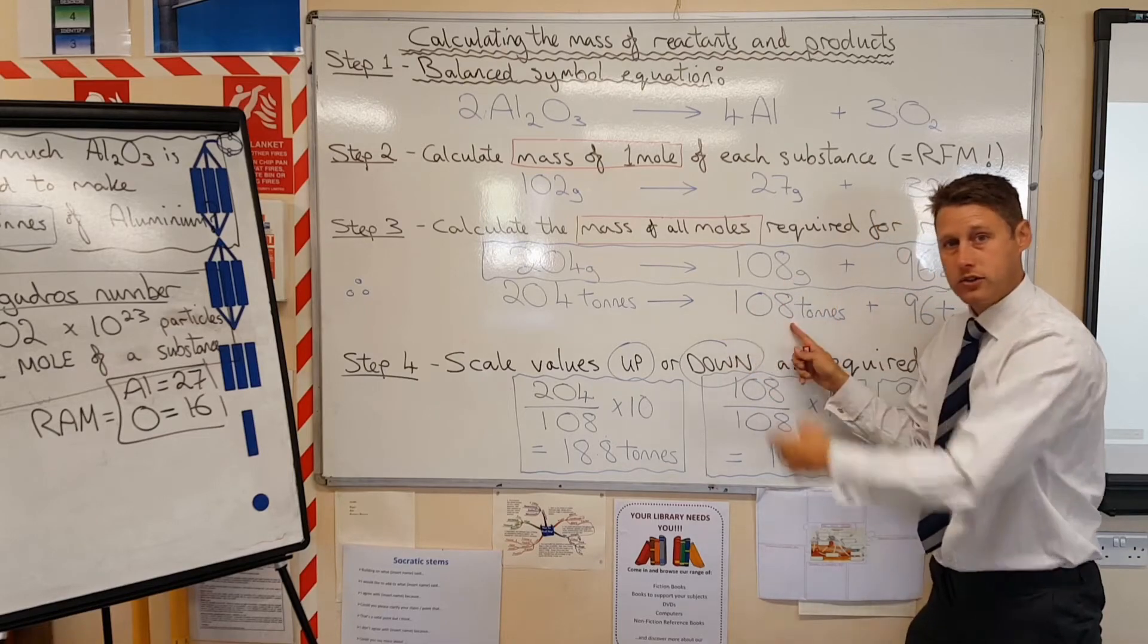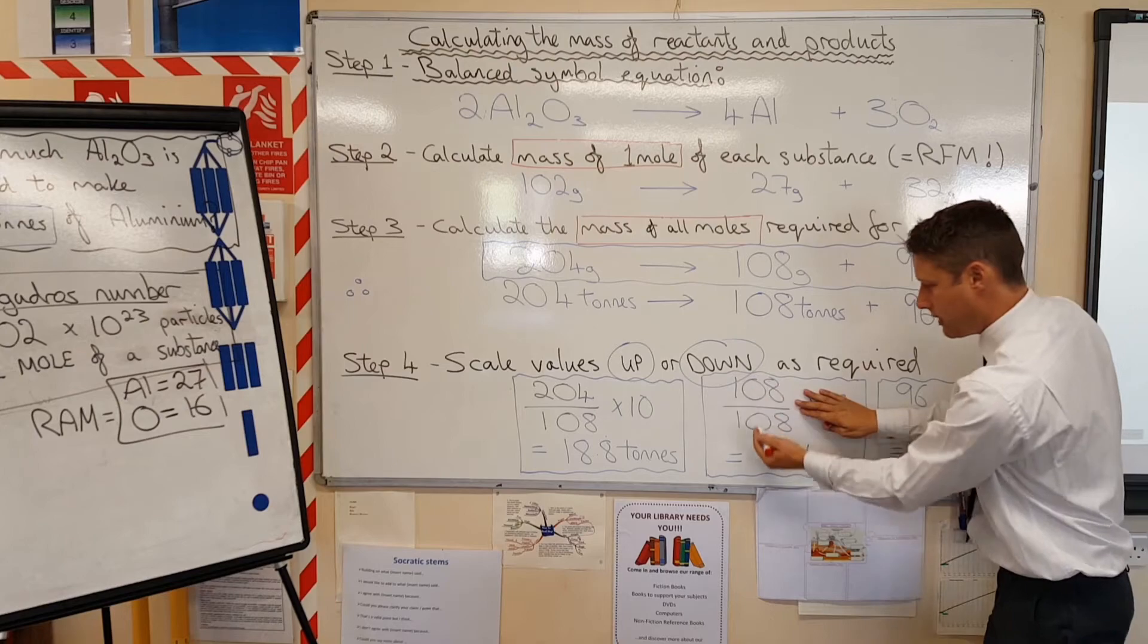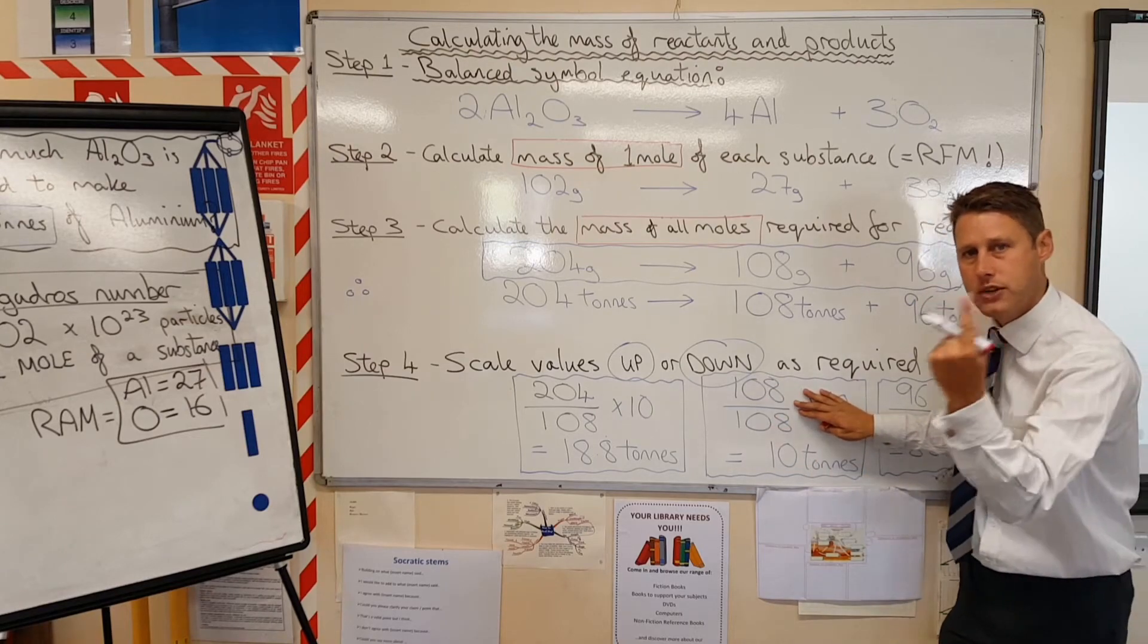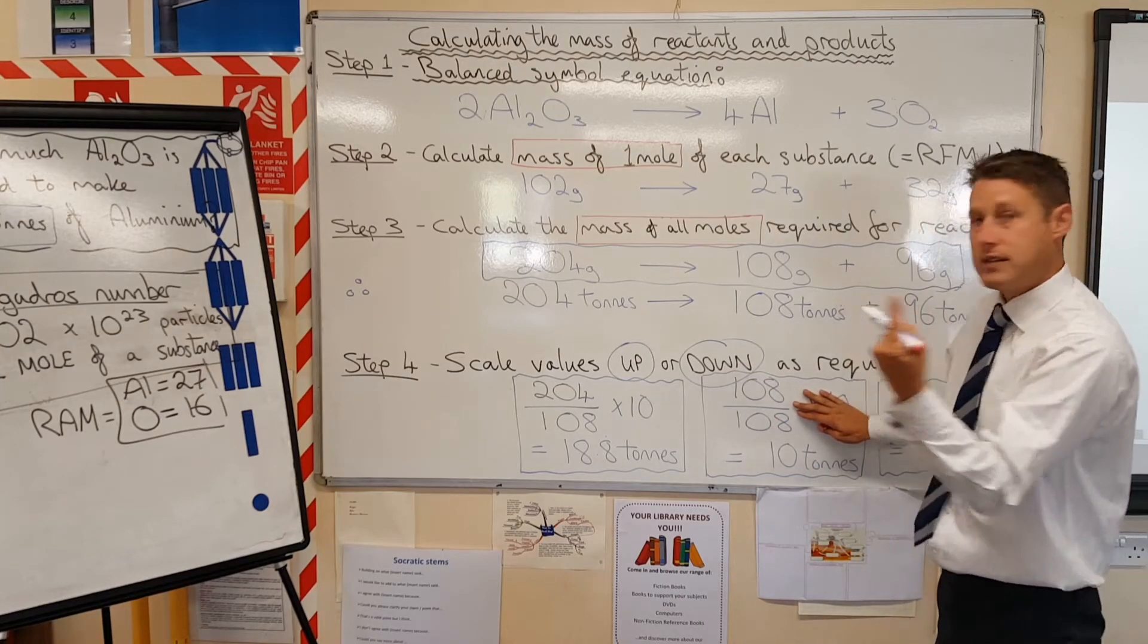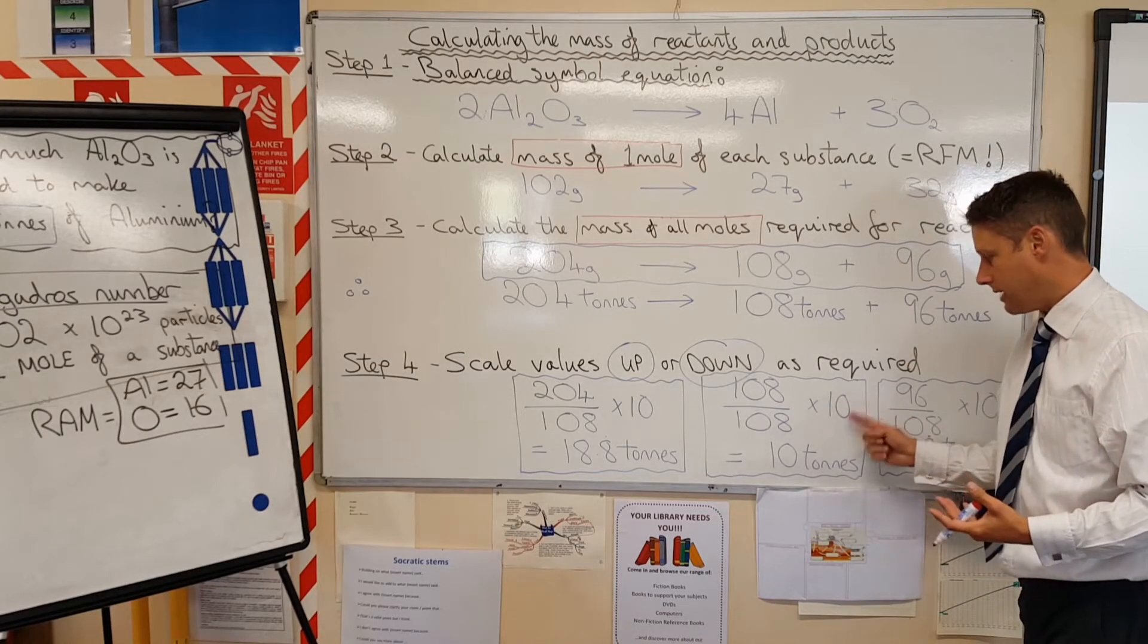To do that, I'm going to divide 108 by 108, so that's easy enough. And I've done that down here. 108 divided by 108, that gives you one tonne. Now, if you were being asked then for 10 tonnes, which we are, we just multiply that number by 10, and that gives us 10 tonnes.